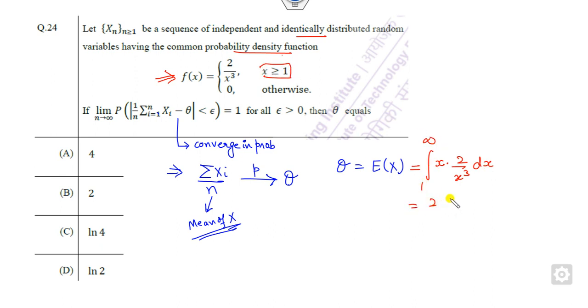X into f(x) dx from domain 1 to infinity. What is the answer? 2 will be outside, it is from integration of 1 by x squared. What is the answer of that? This is minus 1 by x from 1 to infinity. So it is 0, it is minus minus plus 1. What is the right answer? This is 2.